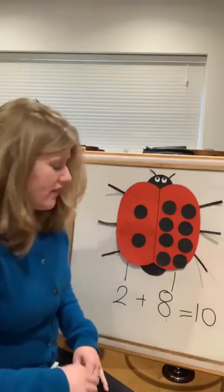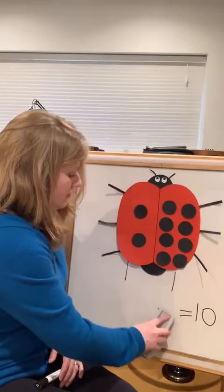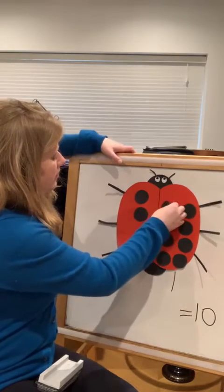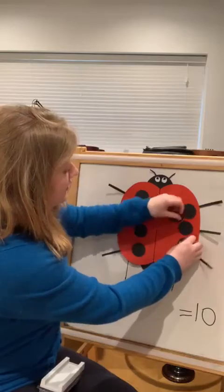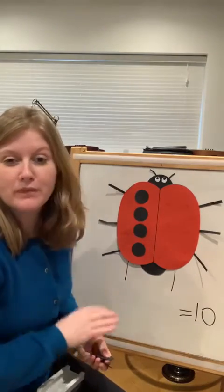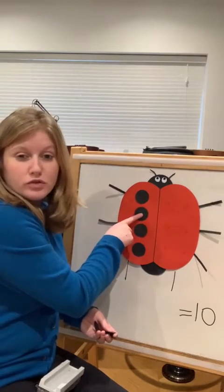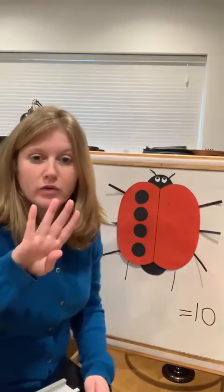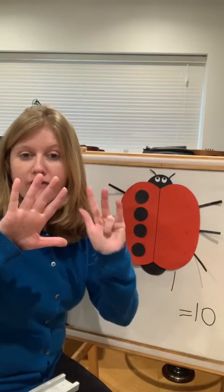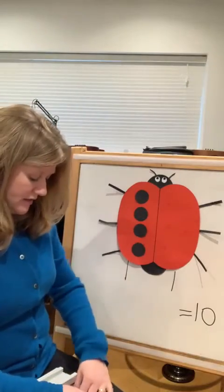Let's do one more together. This time, how many spots have I got on this side of Lucy the ladybird? One two three four — I've got four. How many more do I need to make ten? One two three four five six — so I had four and then I added six more fingers and now I've got ten.